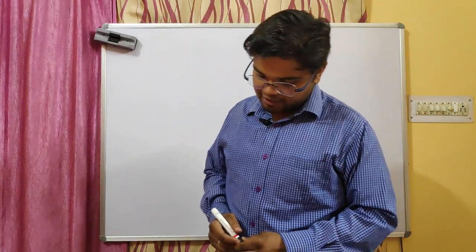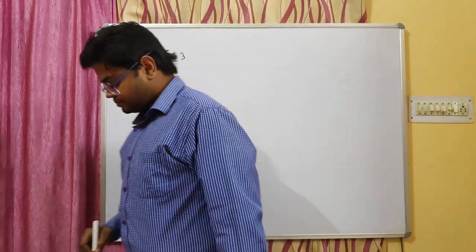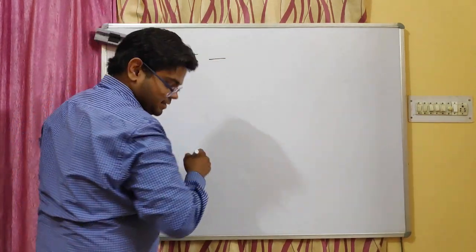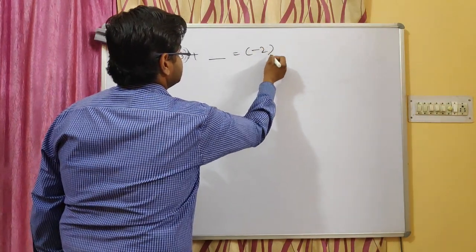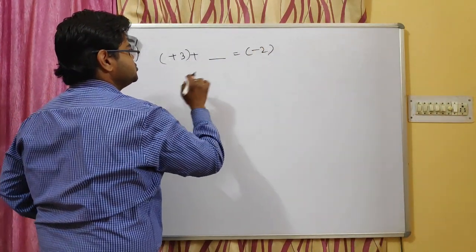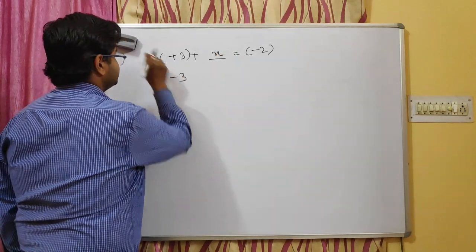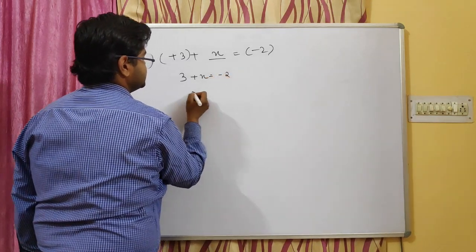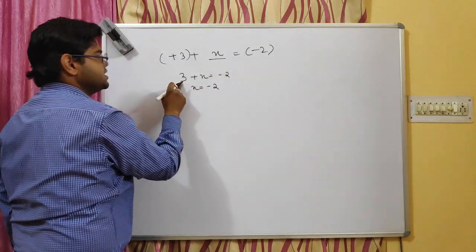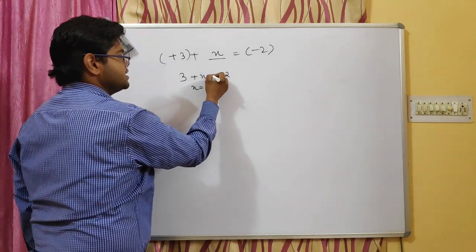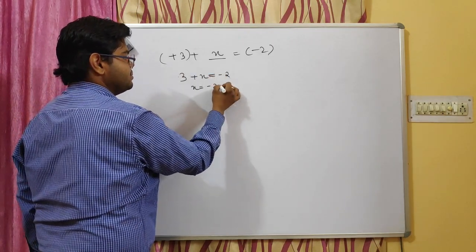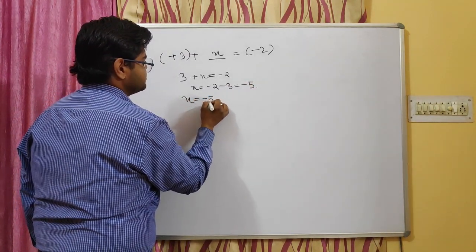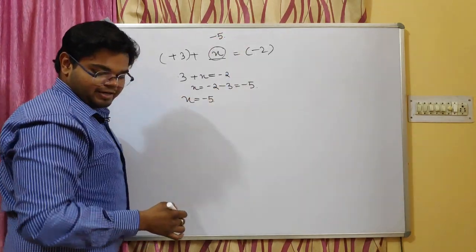Question five: fill in the blanks with the correct integer to make each statement true. Part one: plus three plus blank equals minus two. We set three plus x equals minus two. Transposing three to the right side, it becomes minus, so x equals minus two minus three, which gives x equals minus five. So we put minus five in the blank.